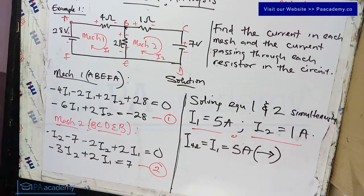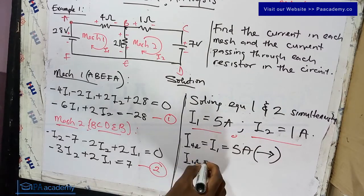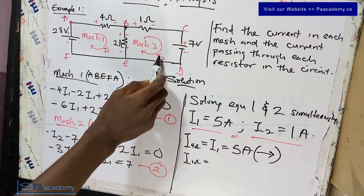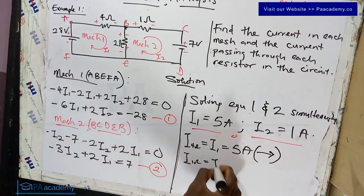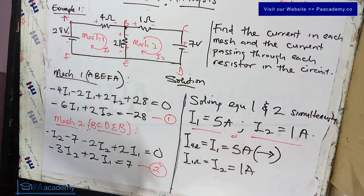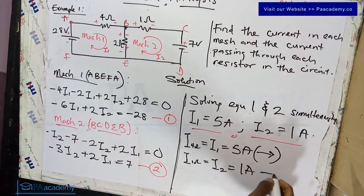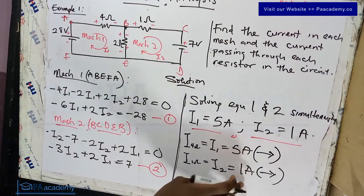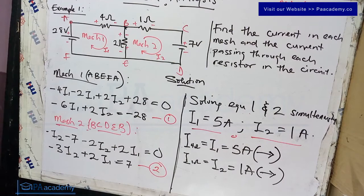For the 1Ω resistor, the only current flowing through it is I2, since it belongs exclusively to mesh two. I2 is 1 ampere, so the current through the 1Ω resistor is 1 ampere. The direction is clockwise as assumed, which is confirmed correct because the value is positive.